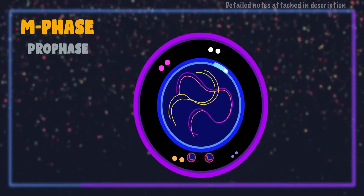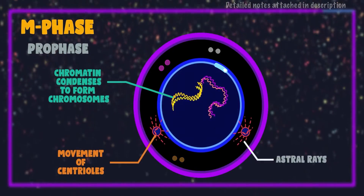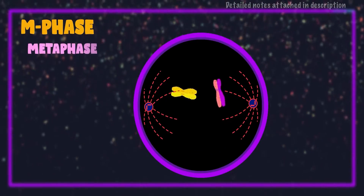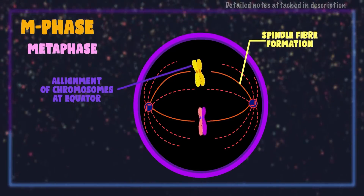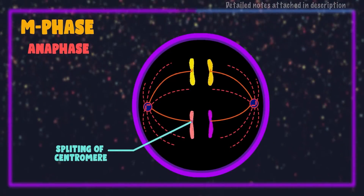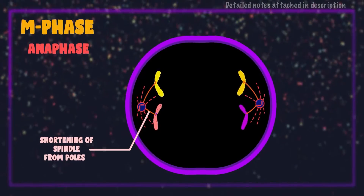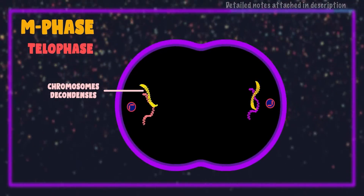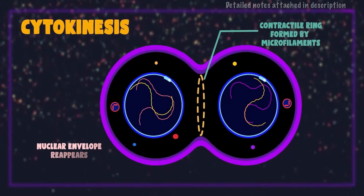The main events of prophase are condensation of chromatin to form chromosomes, movement of centrioles towards opposite ends, formation of astral rays around the centrioles, and disappearance of the nuclear envelope, nucleolus, and cell organelles. During metaphase, the chromosomes are aligned to the equator of the cell, forming a metaphase plate. Spindle fibers from both ends attach to the proteinaceous disc of the chromosome called the kinetochore. In anaphase, spindle fibers shorten, resulting in splitting of the centromere and movement of chromatids towards the poles. Anaphase completes when chromatids reach the poles. In telophase, the nuclear envelope reforms at each pole and the nucleolus and cell organelles reappear.